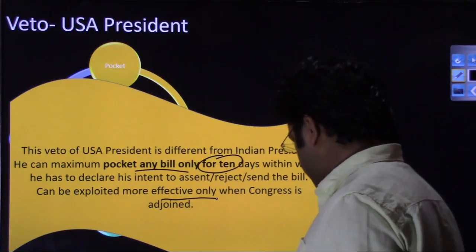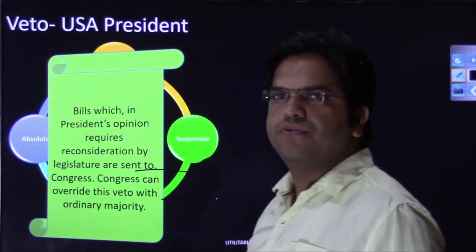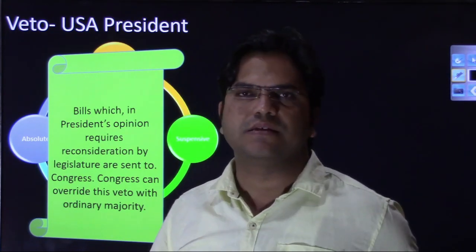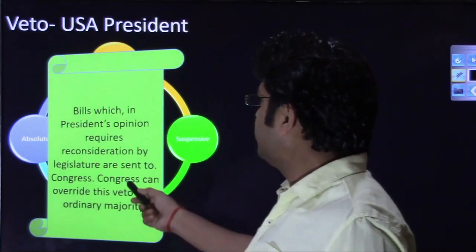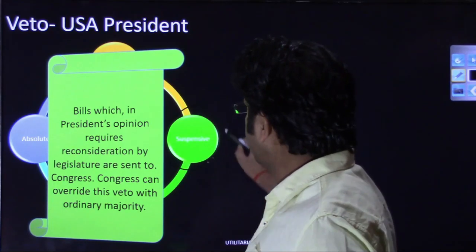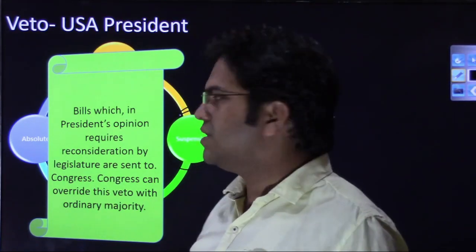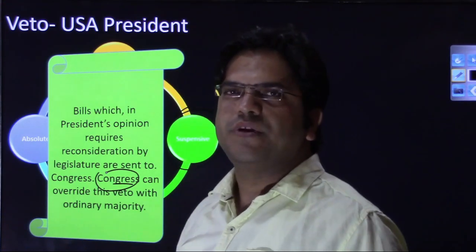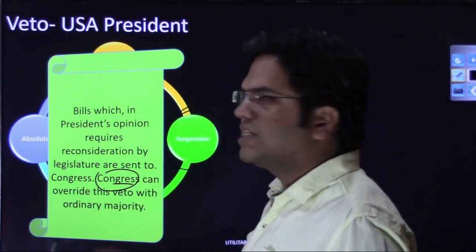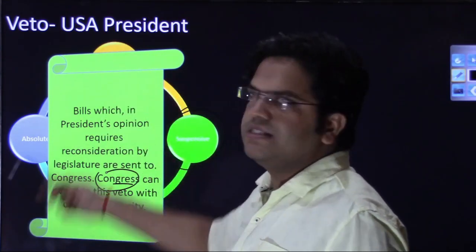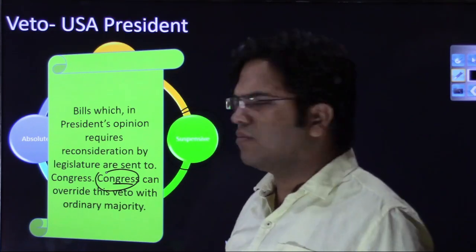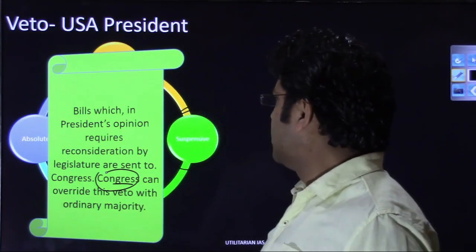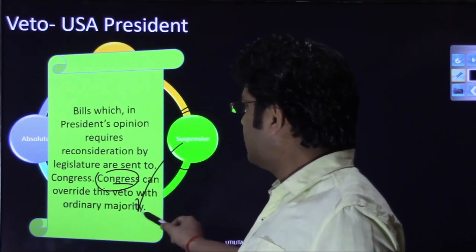The suspensive veto is exercised whenever in the president's opinion a bill is not in public good. He certifies the bill as a suspensive veto and sends it for reconsideration. Congress can incorporate the changes suggested by the president or may not. If the same bill is passed again by ordinary majority — with or without incorporation of changes — the president has no option but to sign it. That is the suspensive veto.